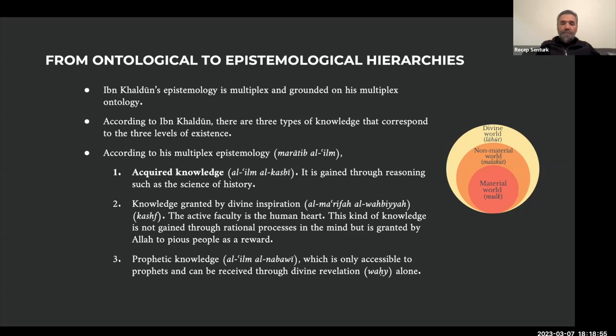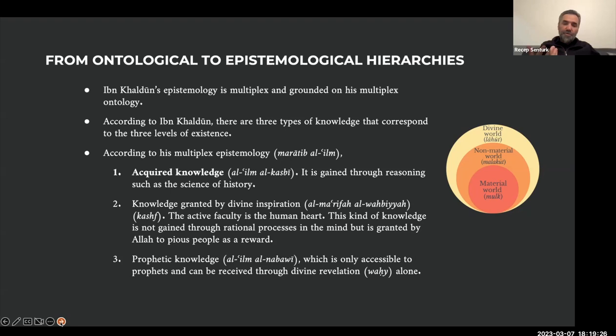Then there is another very special type of knowledge, which is al-ilm al-nabawi — the knowledge of the messengers of Allah — which is only accessible to prophets and can be received through divine revelation, wahi. So these three types of knowledge are accepted by Ibn Khaldun as part of maratib al-ilim — multiplex epistemology — because al-ilm al-kasbi has a different epistemology, al-ilm al-wahbiyya has another epistemology, and al-ilm al-nabawi has yet another different type of epistemology.